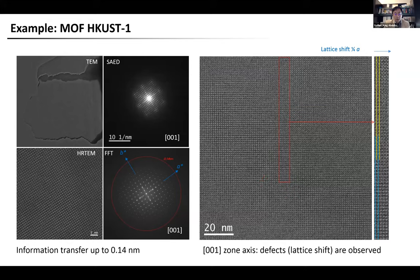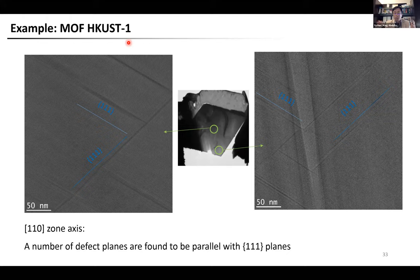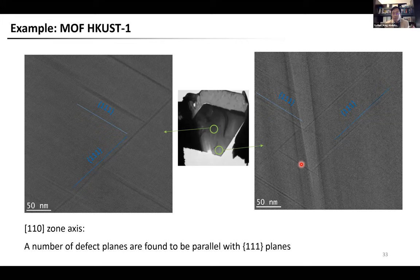Here are the results for HKUST-1 crystals, where the original crystal size is about 20 micrometers — not directly observable by TEM. With cryo-FIB, we can prepare a good specimen and then use TEM to observe it. We see a lot of defects in this seemingly perfect crystal. Such structural details in large MOF crystals cannot be discovered without suitable specimen preparation and imaging techniques.